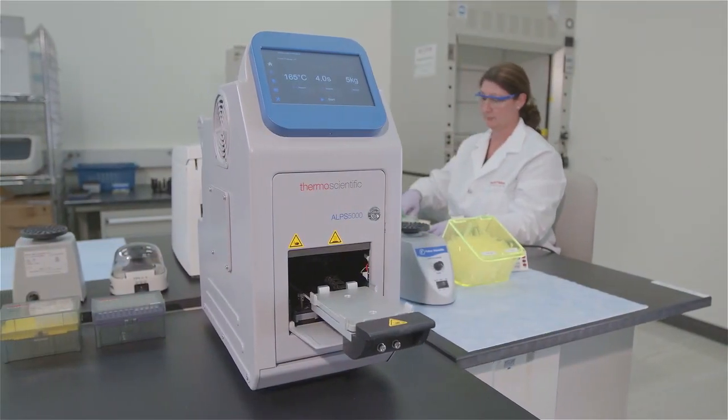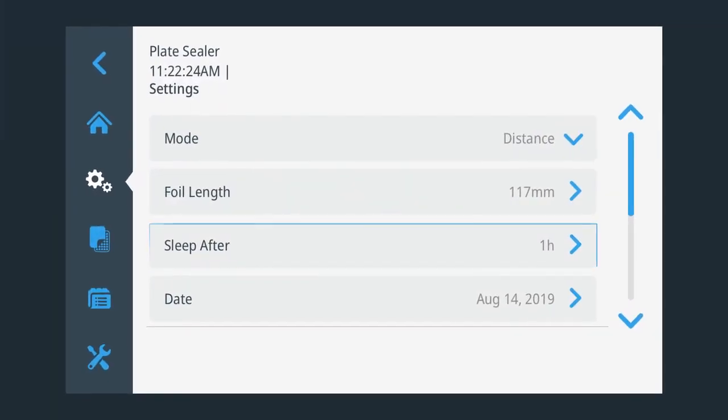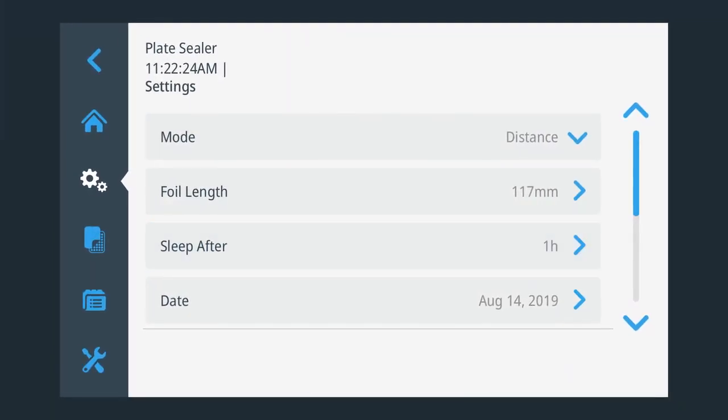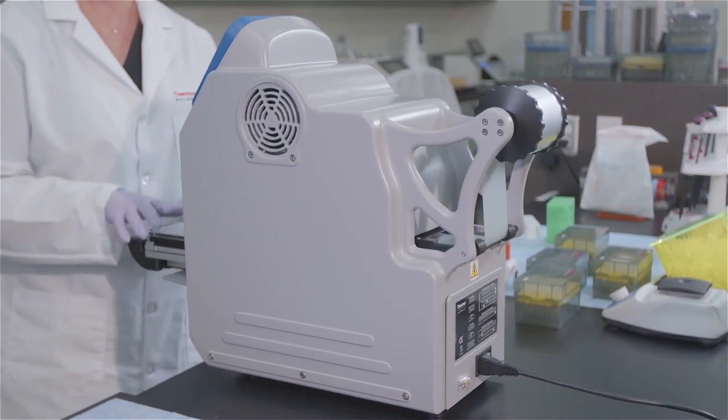To help save energy, the automated plate sealer enables you to set a time of inactivity, after which the unit will return automatically to default room temperature. To restart the heating element, simply touch the screen.